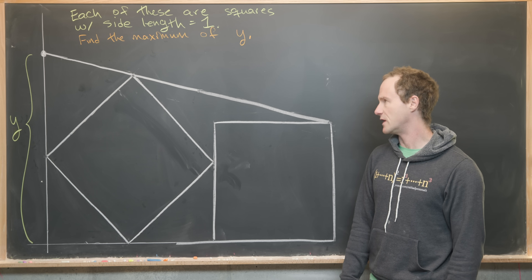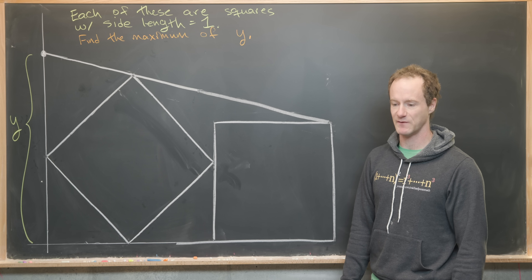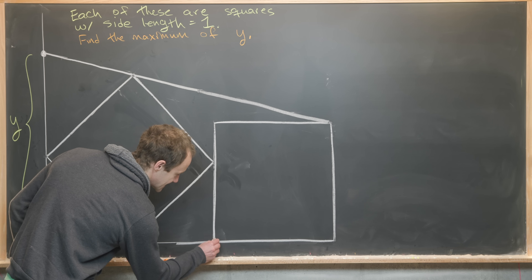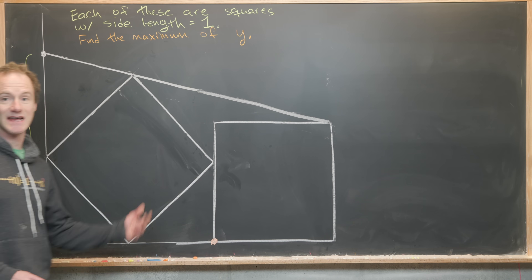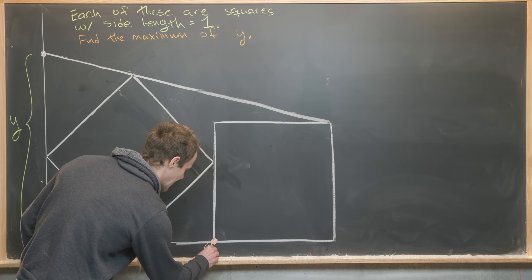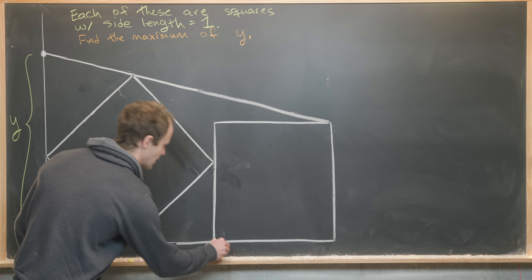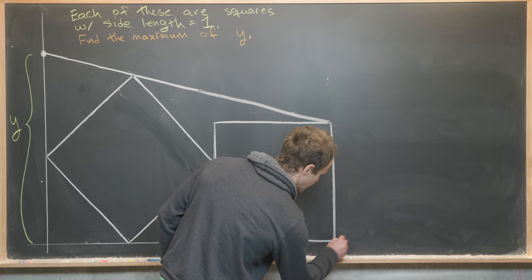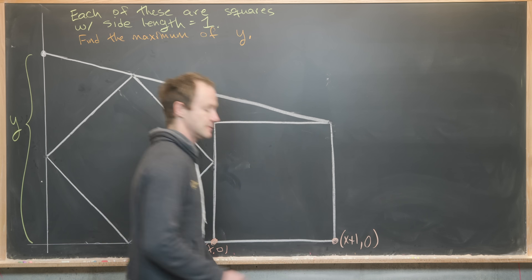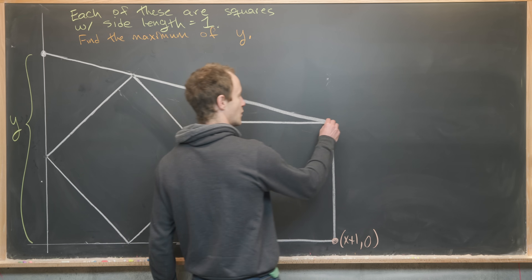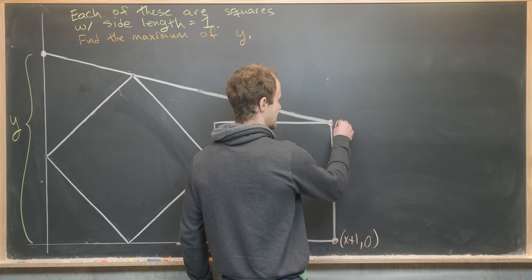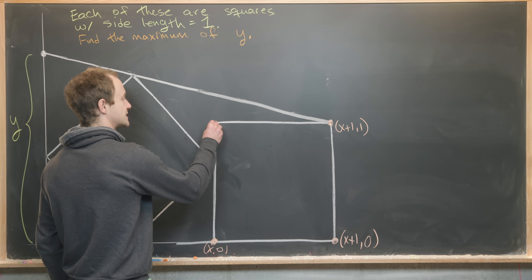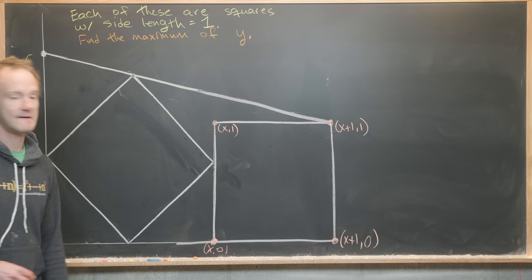Let's see what we need to do in order to find this maximum value. We're going to put this in the coordinate plane. This coordinate right here is x, so it's along the x-axis — this will be the coordinate (x, 0). Since this has side length one, this coordinate over here will be (x+1, 0), this coordinate is (x+1, 1), and this coordinate is (x, 1).